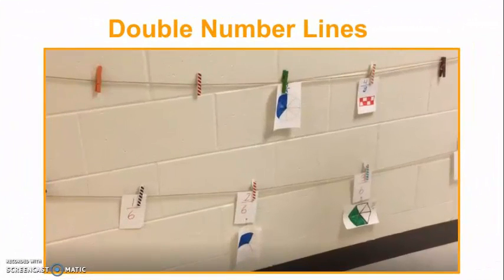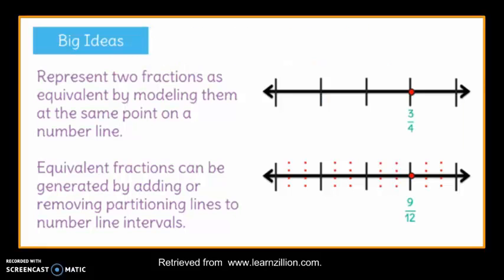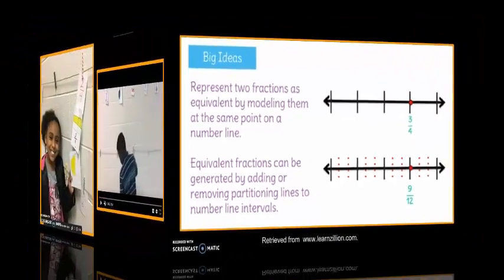In addition to area models, students should use number lines to locate equivalent fractions. A common misconception is that students often count the spaces or increments instead of finding fractions that are the same distance from zero or at the same point on the number line. When using double number lines, students are able to represent two fractions as equivalent and build understanding that fractions can be generated by adding or removing partitioning lines.